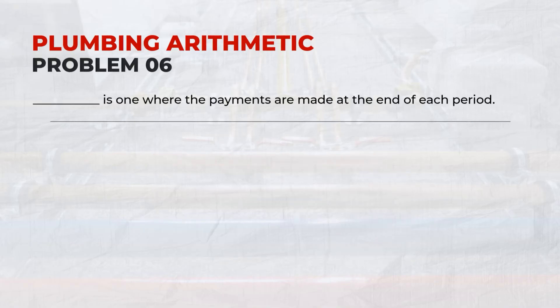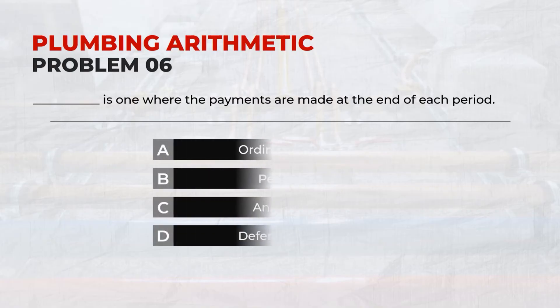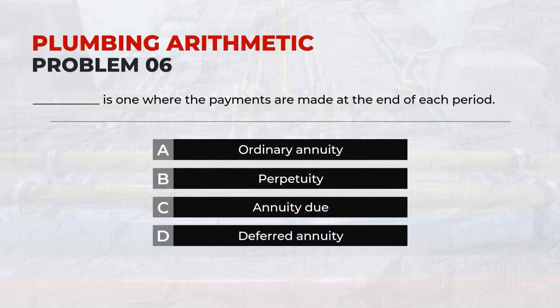Problem 06: Is one where the payments are made at the end of each period. Answer: A, Ordinary Annuity.